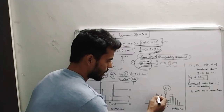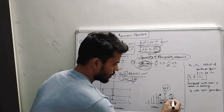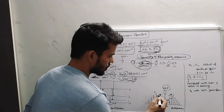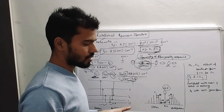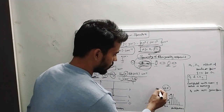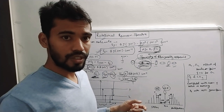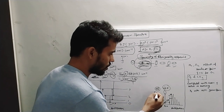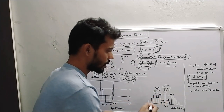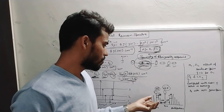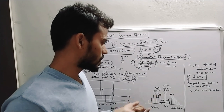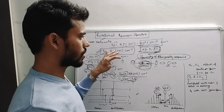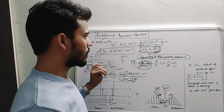For any two consecutive Stokes lines, say the second and third, the distance between them is 4B. You must remember this because many questions are asked in NET and GATE exams about these spectral lines. The first line is at 6B distance from the excitation line, and subsequent lines are separated by 4B.